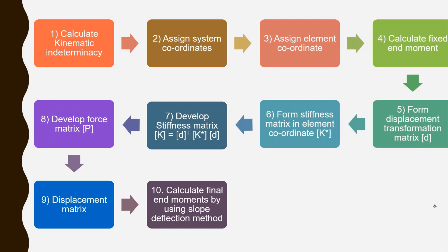After developing the element stiffness matrix, we develop the stiffness matrix for the entire structure, which equals the transpose of the displacement transformation matrix multiplied by the element stiffness matrix multiplied by the displacement transformation matrix itself. After developing the stiffness matrix, we develop the force matrix. From the force matrix and stiffness matrix we derive the displacement matrix, equal to minus K-inverse times P, where K-inverse is the inverse of the stiffness matrix and P is the force matrix. Finally, we calculate the final end moments.